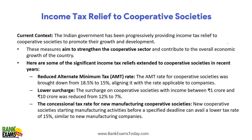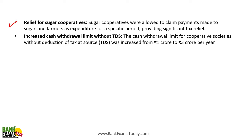Cooperative societies received income tax relief. The minimum alternative tax rate was reduced from 18.5% to 15%. The surcharge for cooperative societies with income between 1 and 10 crores was reduced from 12% to 7%. New manufacturing cooperative societies now get a concessional tax rate of 15%. Sugar cooperatives were allowed to claim payments made to sugarcane farmers as expenditure. Additionally, cooperative societies can now withdraw cash without TDS up to 3 crores per year, increased from the earlier limit of 1 crore.